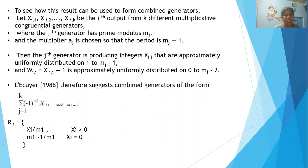The j-th generator has a prime modulus value m_j, and we use a multiplier value a_j that is chosen from period m_j minus 1.